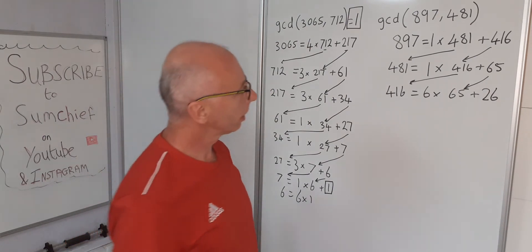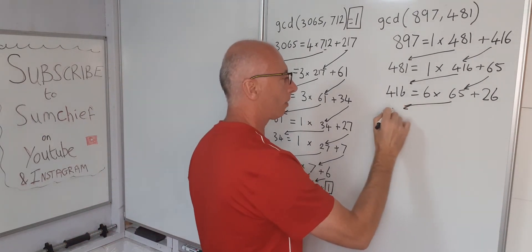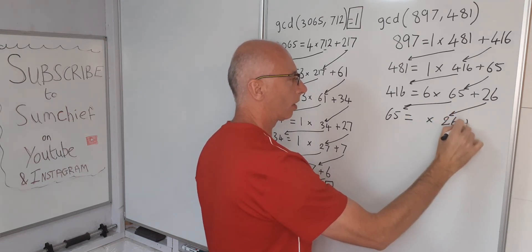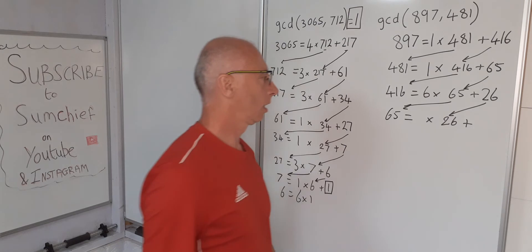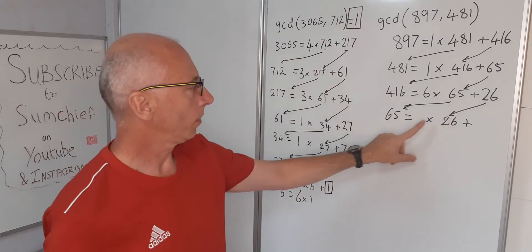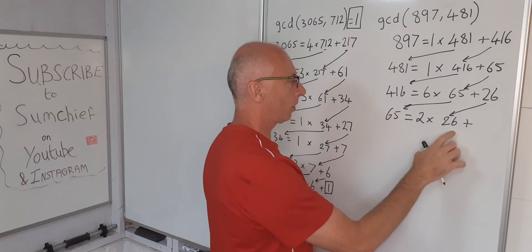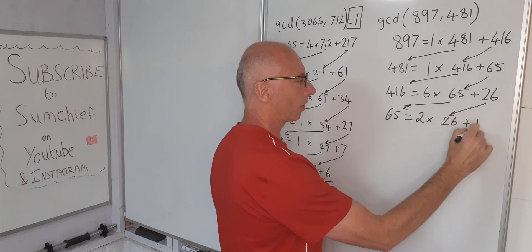Let's continue. 65 equals something times the 26 plus the remainder. Well 2 times 26 is 52, so that's pretty straightforward. 2 times 26 is 52 off 65 leaves us 13 left over.